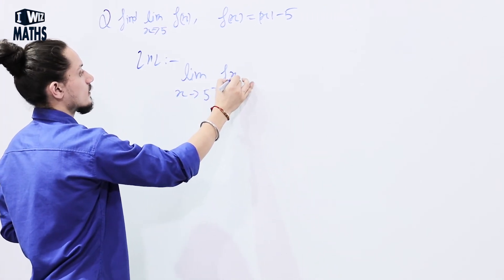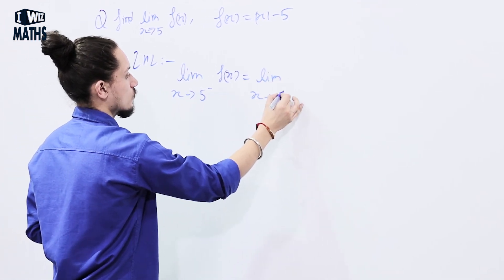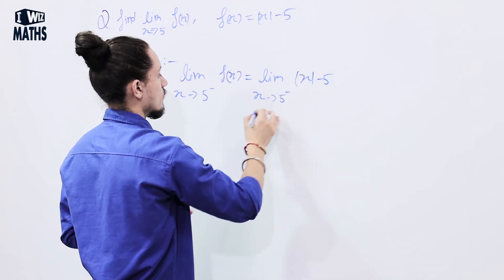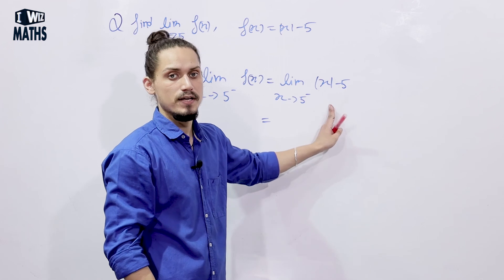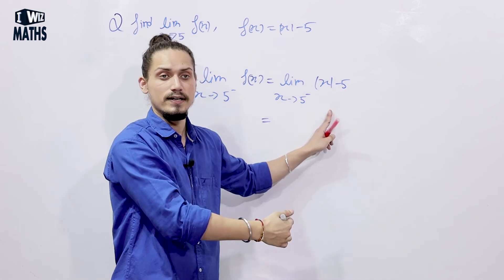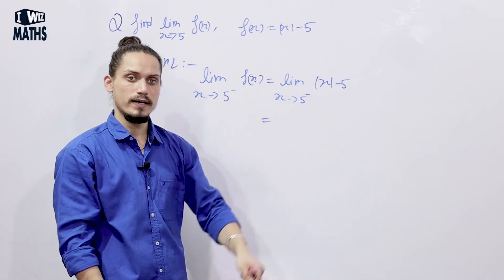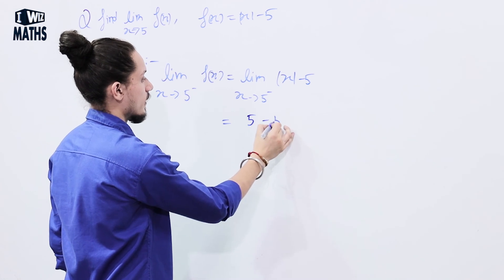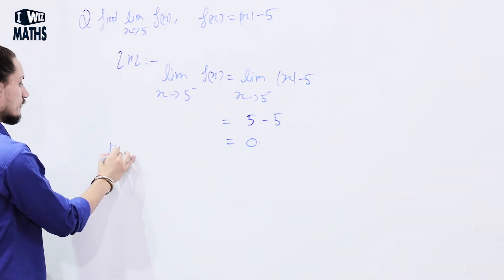Left hand limit: lim (x → 5⁻) of |x - 5|. Approaching from the left, x < 5, so values like 3, 4 approach 5, giving 5 - 5 = 0.